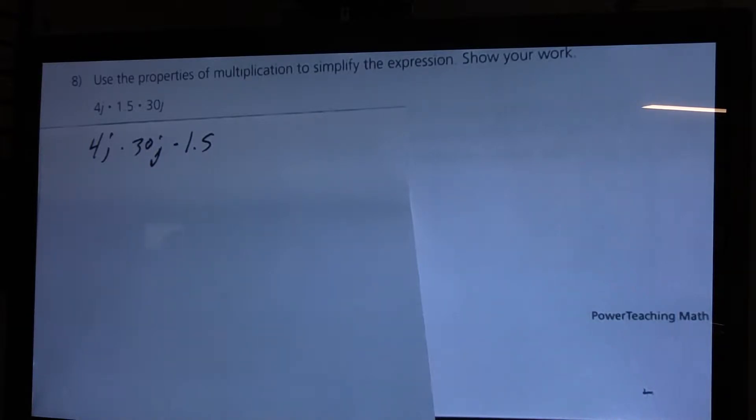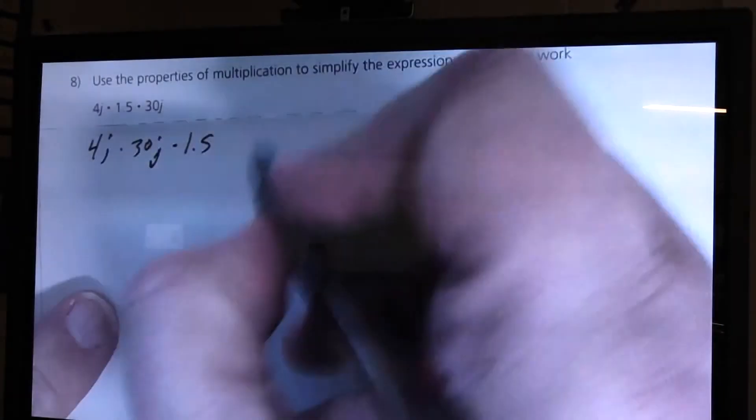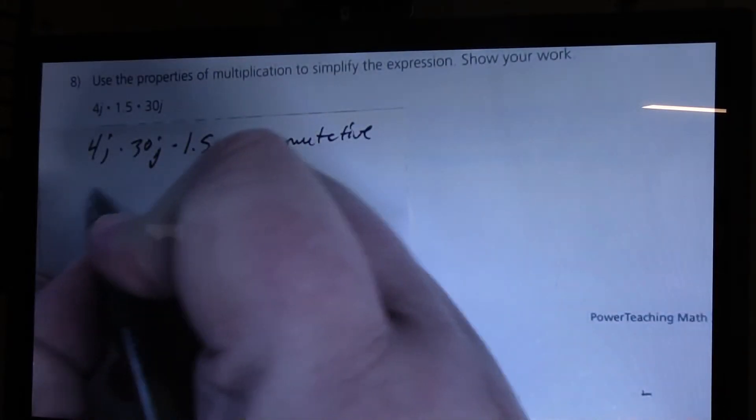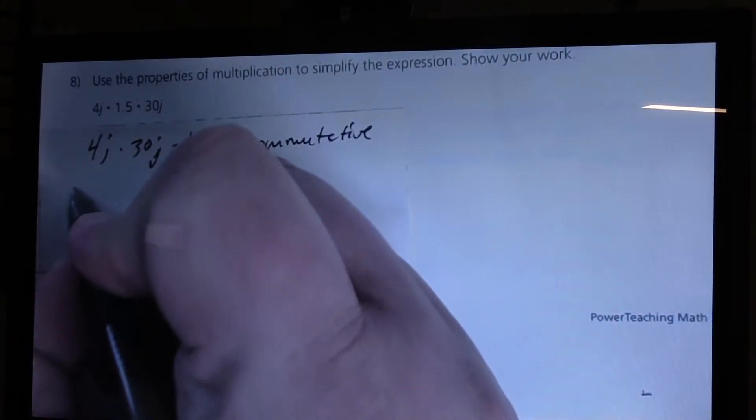So, I'm going to say 4j times 30j equals, help me out children, what do you think? Okay, I had a kid say 120j, but let me ask you this. If that's true, I'm going to write commutative property here. If that's true, then let's look at it this way.